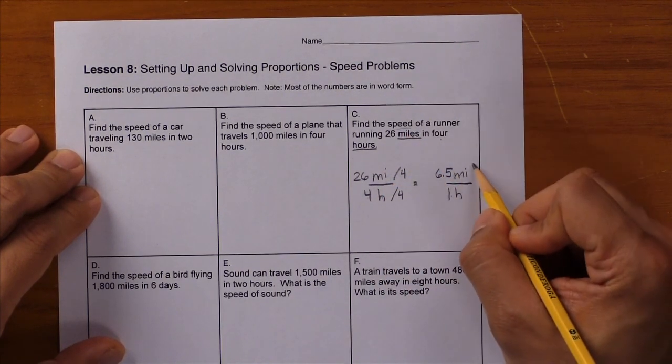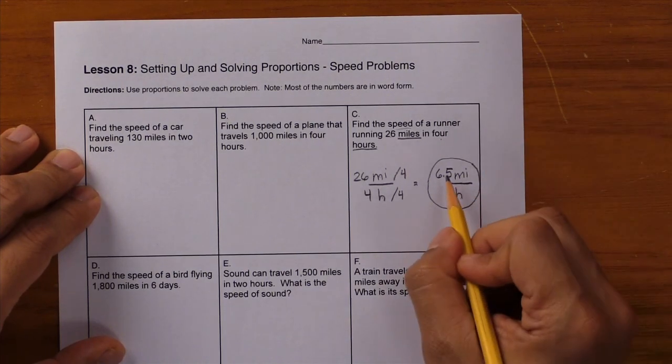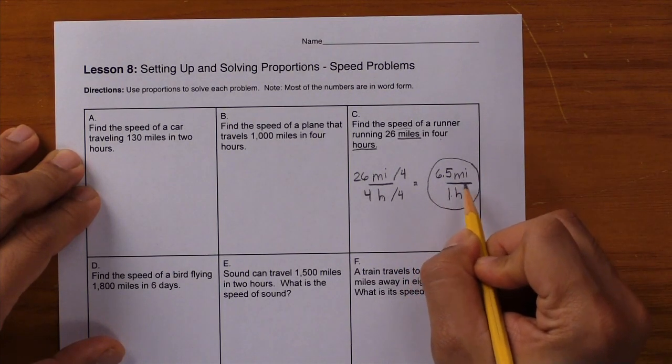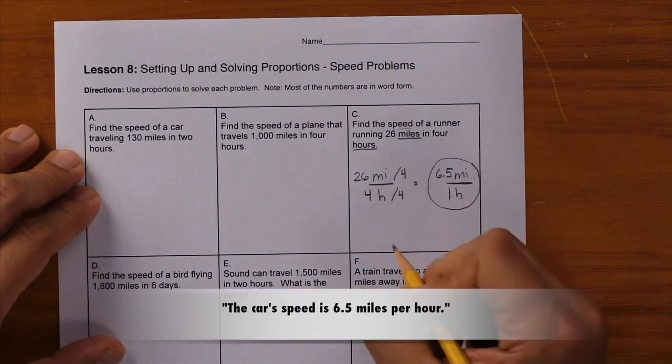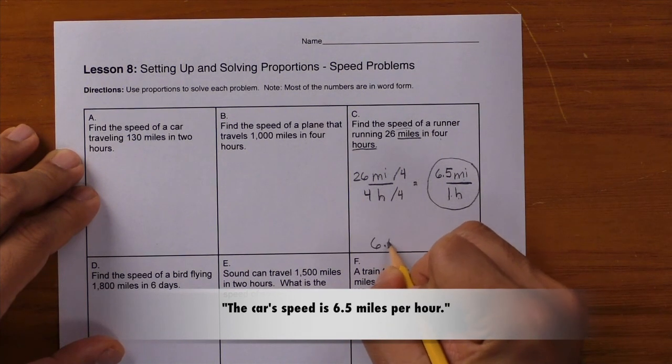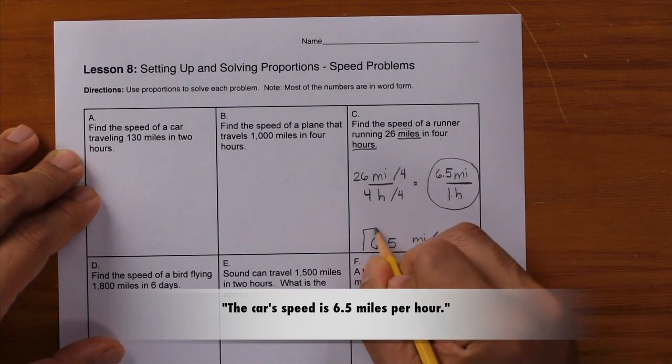Remember, the question is asking for the speed, so it's this whole side of the proportion. The answer is 6.5 miles per one hour, or 6.5 miles per hour. So write down 6.5 miles per hour and box your answer.